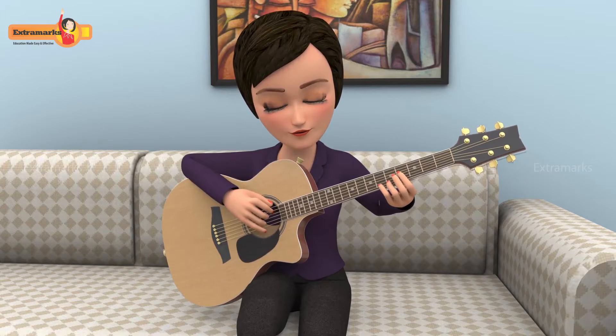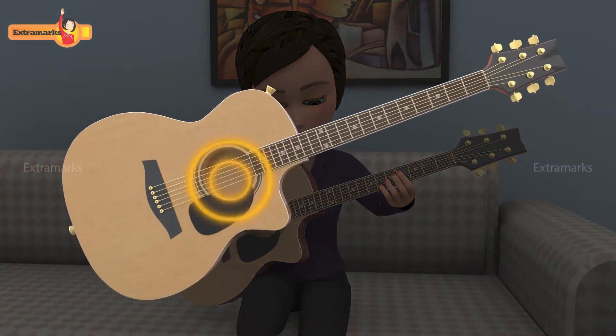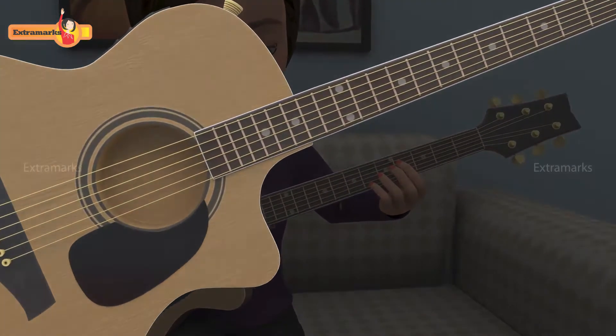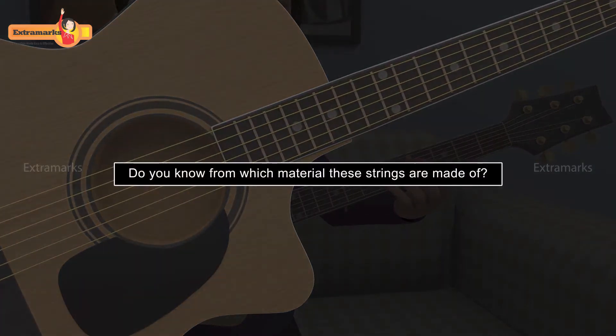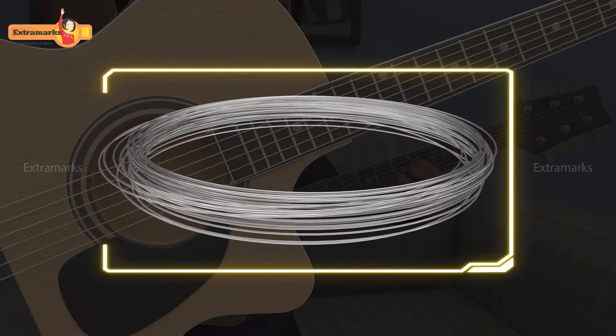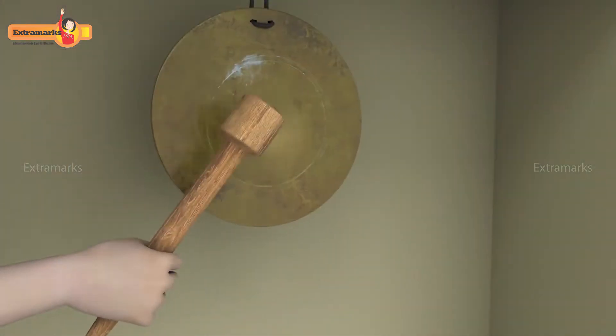Many of us love to play guitar. A guitar is a musical instrument that usually has six strings. Do you know from which material these strings are made of? These strings are made of metals. Metals produce a ringing sound when hit with another object.